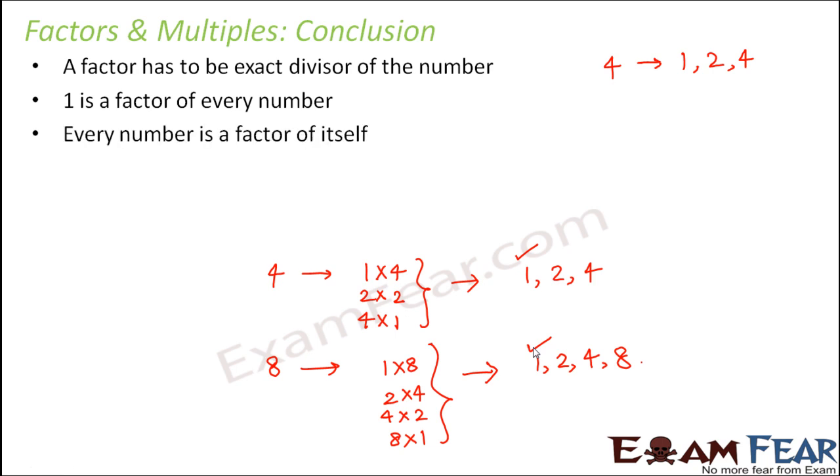Every number is a factor of itself. Now that is also another interesting fact that 4 is a factor of 4, 8 is a factor of 8, 13 is a factor of 13, 59 is a factor of 59 and so on. So basically 1 and the number itself, these two factors will be there for every number.